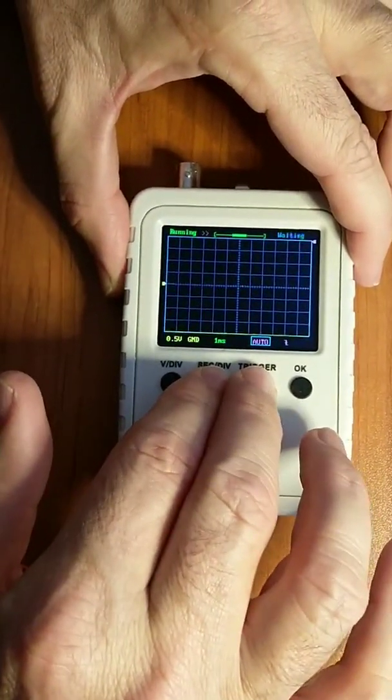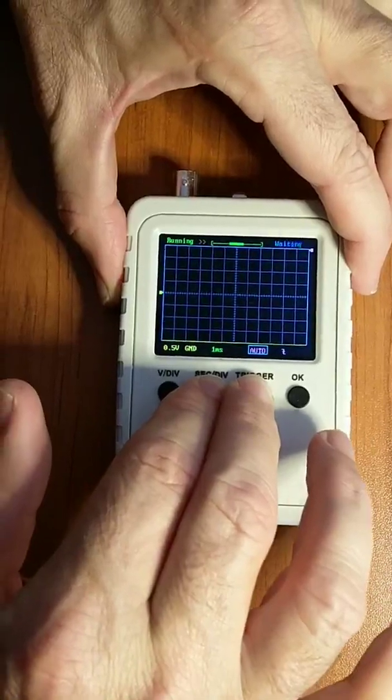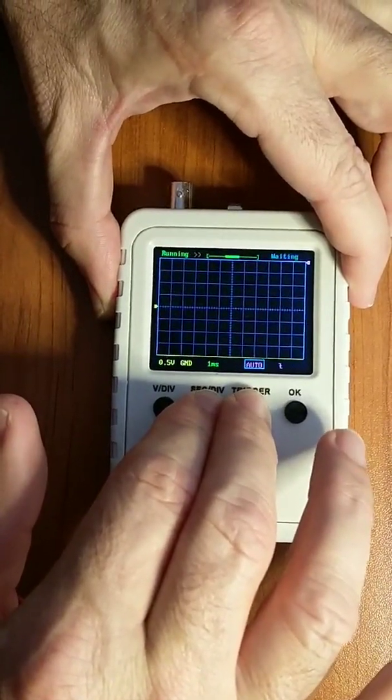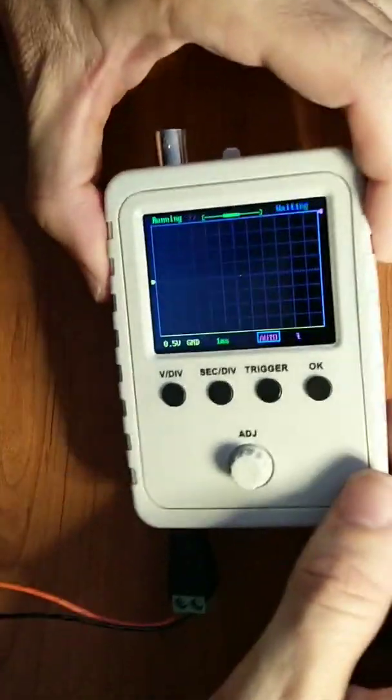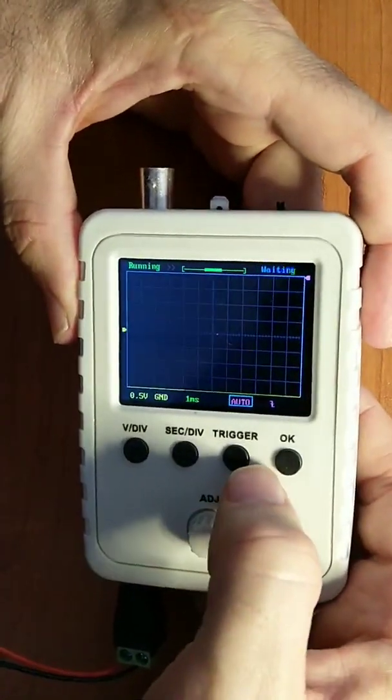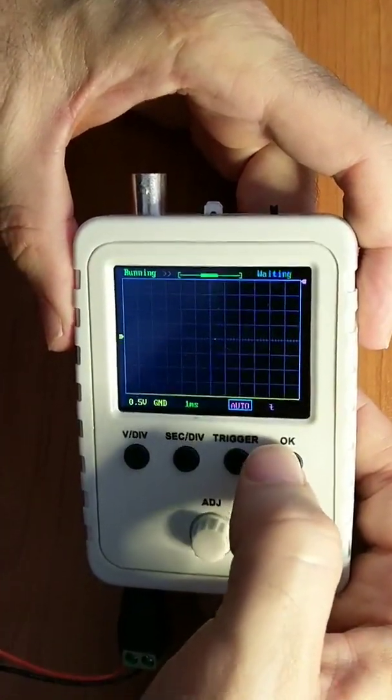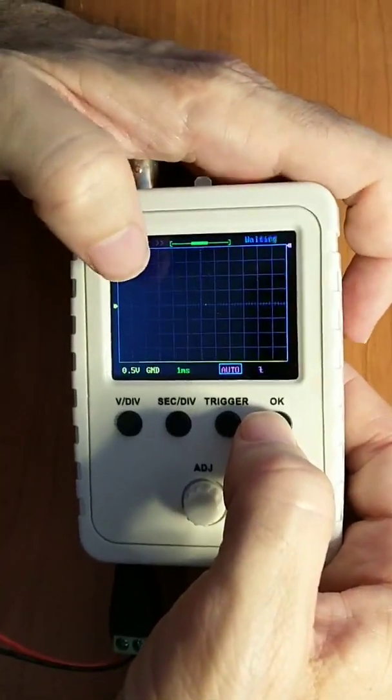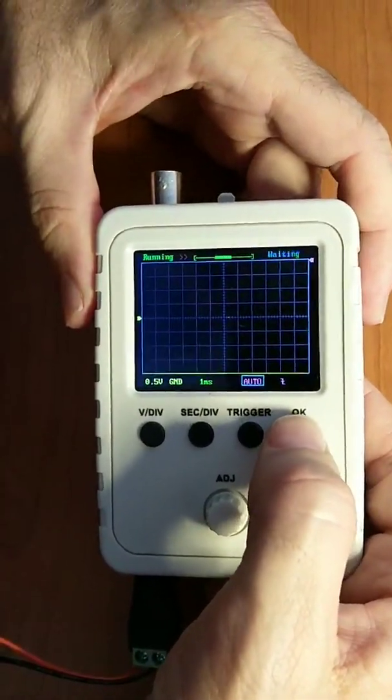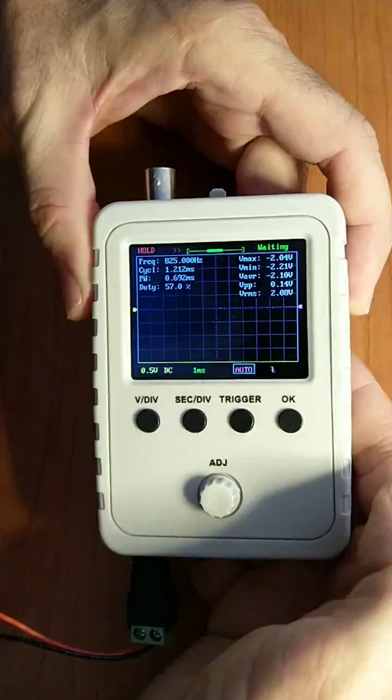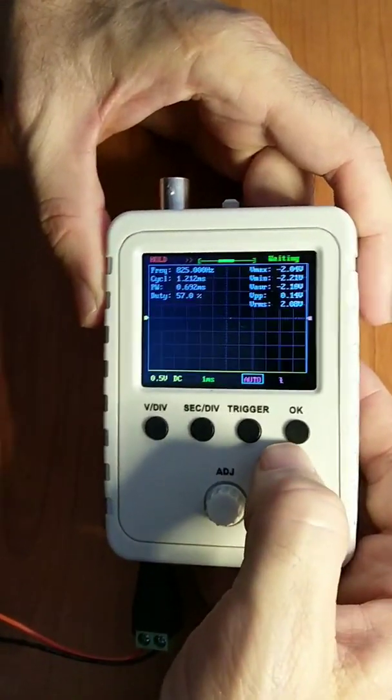By pressing and holding the OK button in for three seconds, you can display the measurements if they're not already there. One... oh sorry, more than just like one second.